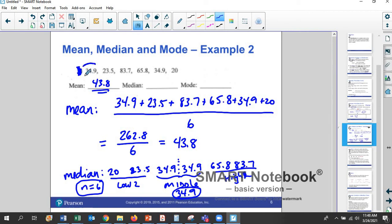Along with that, the mode, 34.9 is the only one that occurs more than one time. And so it turns out that the mode is also 34.9. So hopefully that is pretty straightforward.